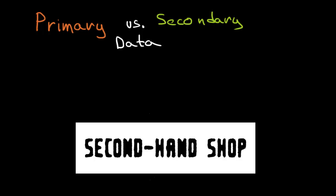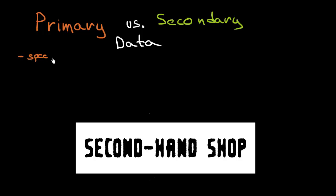If you are going to do some research, you are going to need two kinds of data. First, there are primary and then there are secondary data. The difference between them is very basic. If you are going to use some primary data, they need to be collected specifically for your purpose — they are specific for your research.